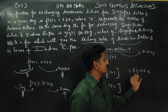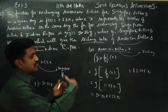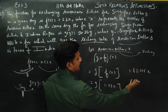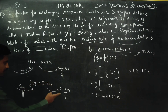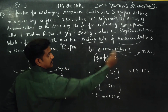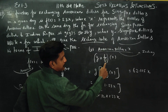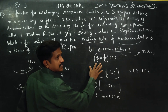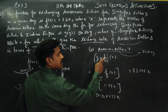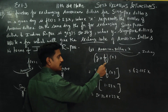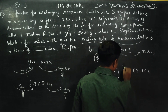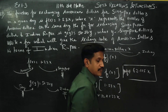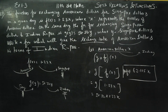The left hand side is America to Singapore, and this is Singapore to India. This is your final answer: G∘F of X equals 62.115x, where x is the American Dollar. Thank you.